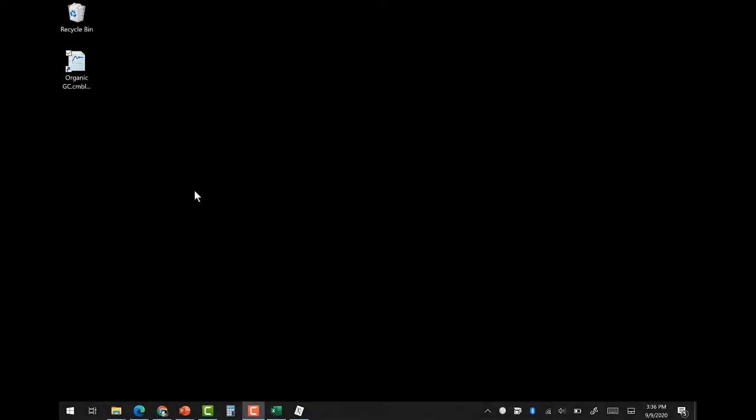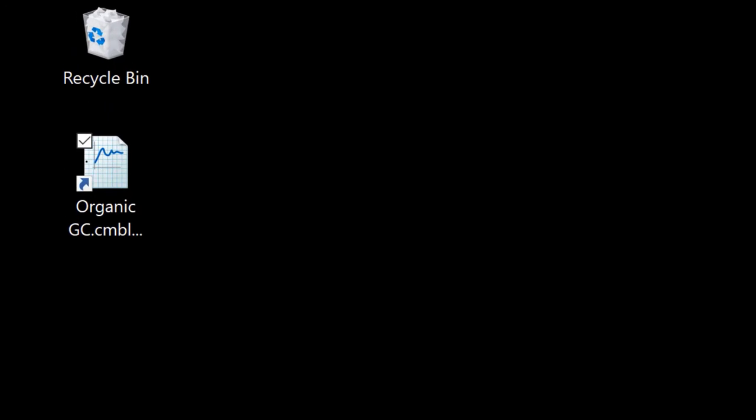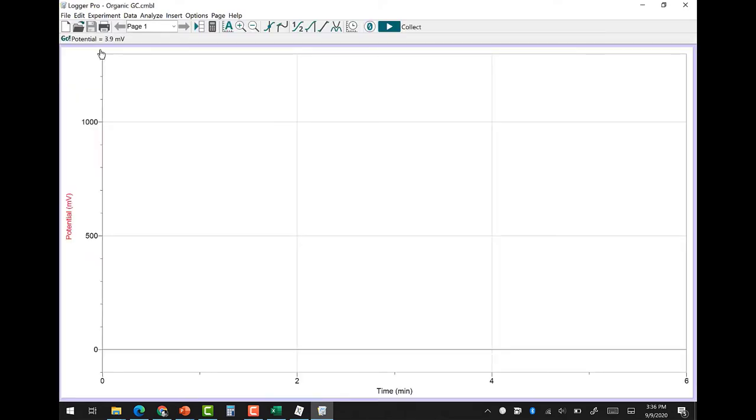There's a shortcut on the desktop named organicgc.cmbl. Double-click this icon to get the program started. Your screen should be one big graph with minutes on the x-axis and potential in millivolts on the y-axis. That's signal.